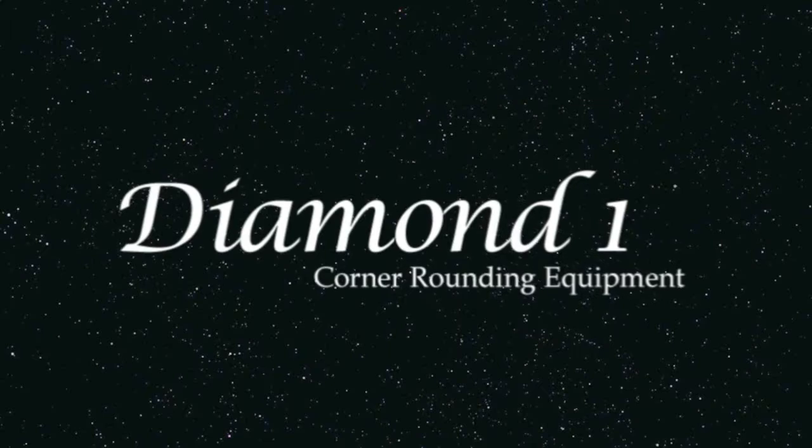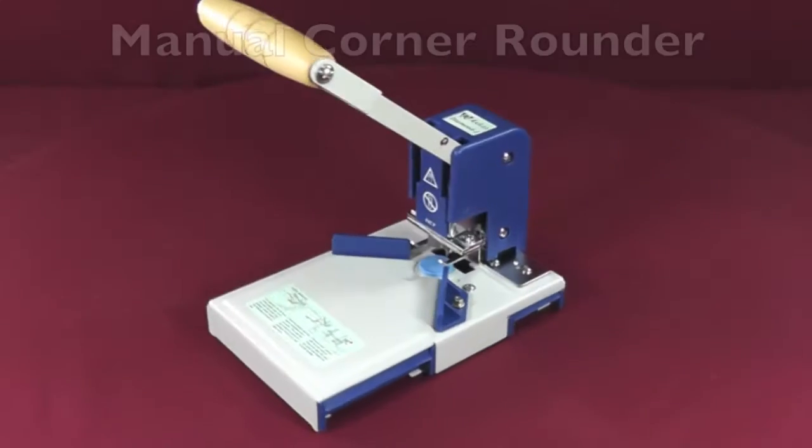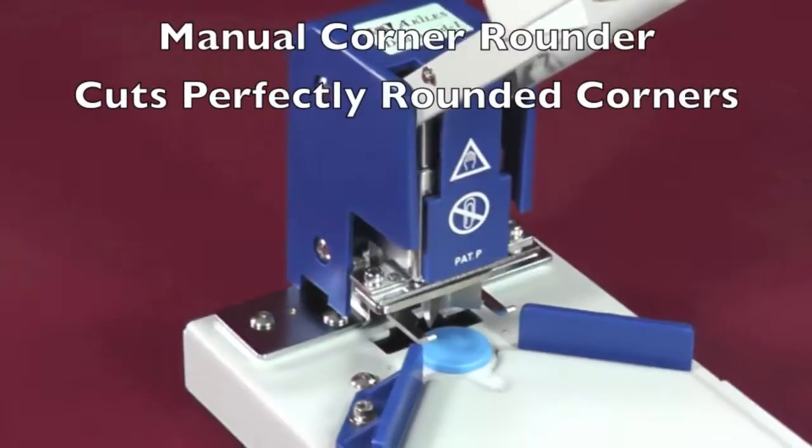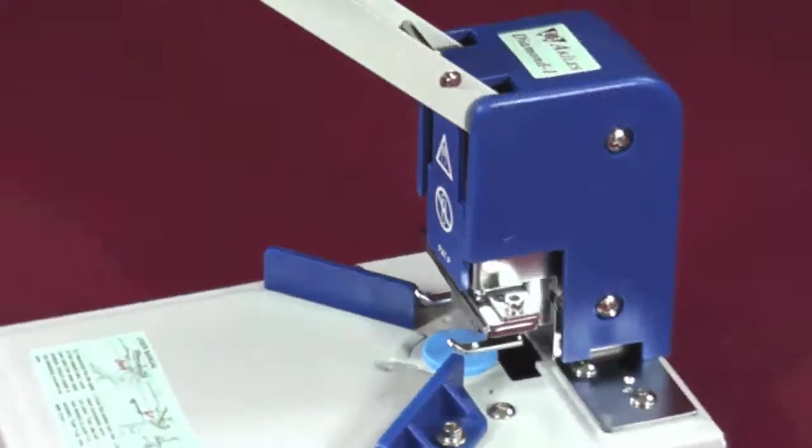Achilles Diamond 1 Corner Rounding Equipment. The Achilles Diamond 1 is a manual corner rounding machine which can cut perfectly rounded corners on a wide variety of materials.